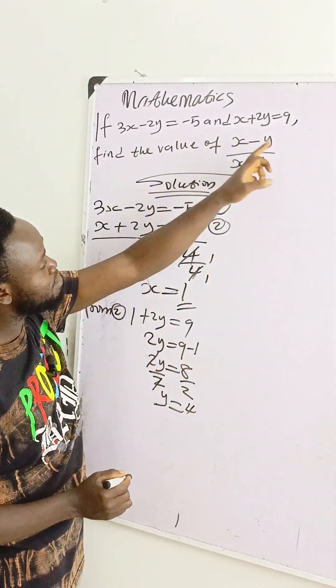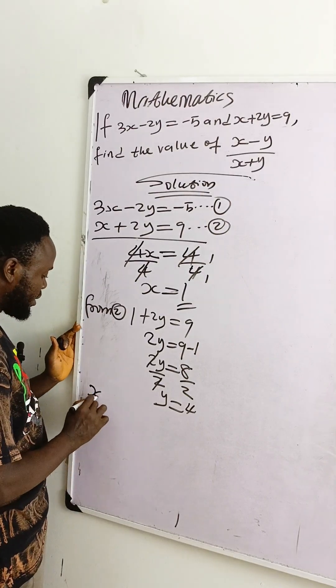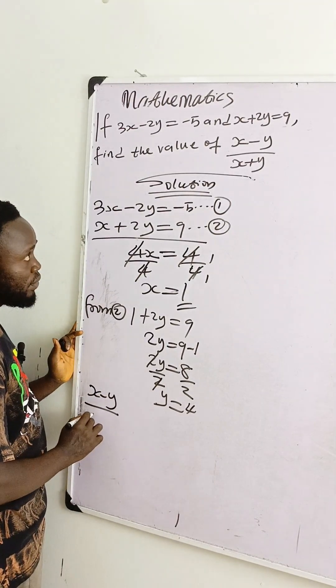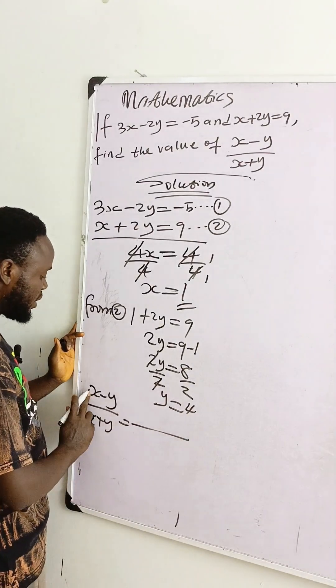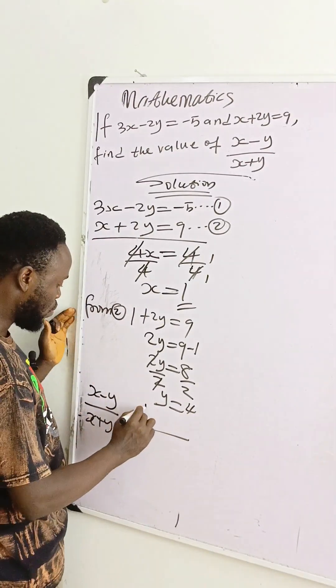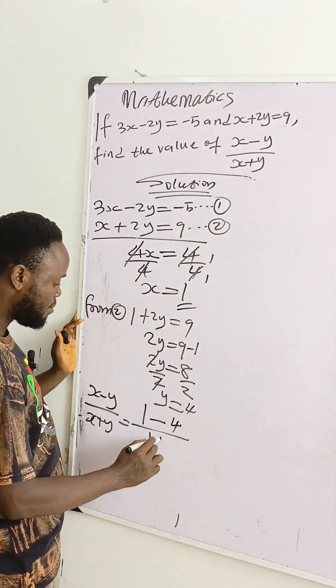But we are looking for x minus y over x plus y. This is what we are looking for. Let's find it. x minus y over x plus y is equal to, wherever you see x, you put 1. 1 minus y. y is 4 over 1 plus 4.